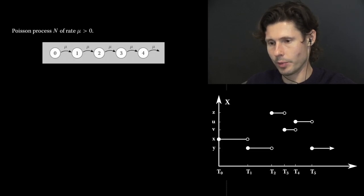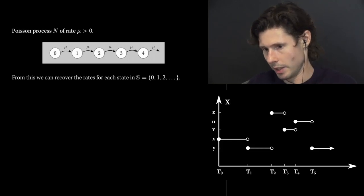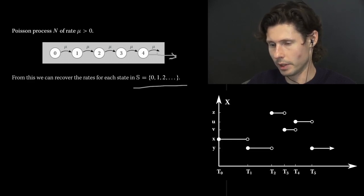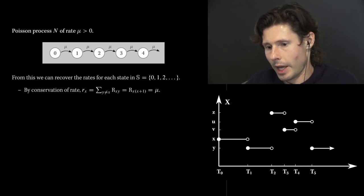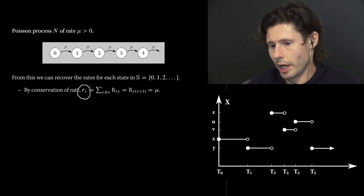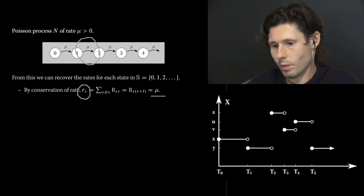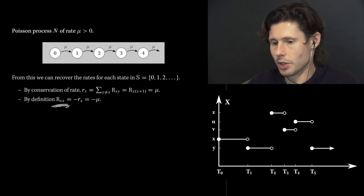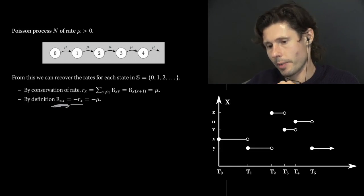Immediately from this diagram, you see that the states are all natural numbers. The arrow at the end essentially means continue on like this forever, so the state space is just the natural numbers. By the conservation of rate, the rate out of state x must be the sum of all rates in the transition diagram. For every single state here, there's only one arrow leaving at rate mu. Therefore, the rate of every single state is just mu — we wait in every state for an exponential amount of time of rate mu. The diagonal entry Rxx is just negative the rate for that state, ensuring the row sums to zero.